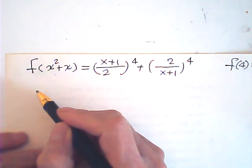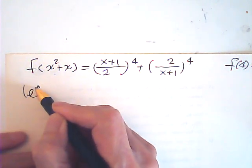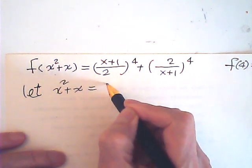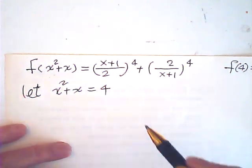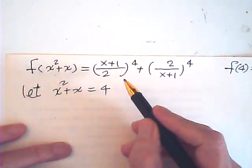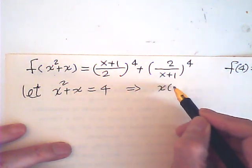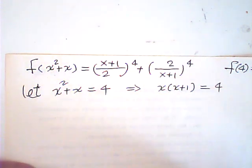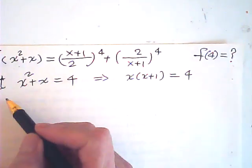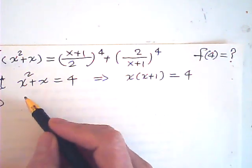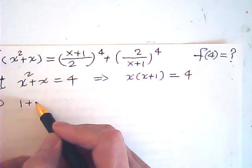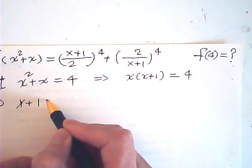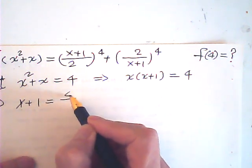I let x squared plus x is equal to 4, so that means x times (x plus 1) is 4, so I can have x plus 1 is equal to 4 over x.